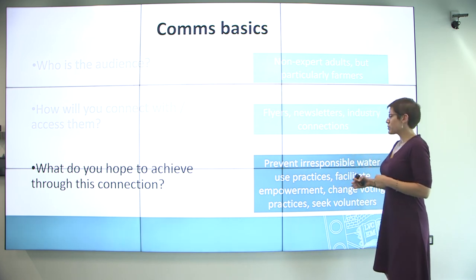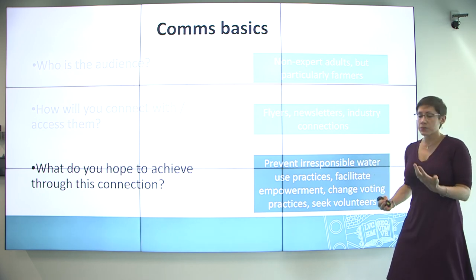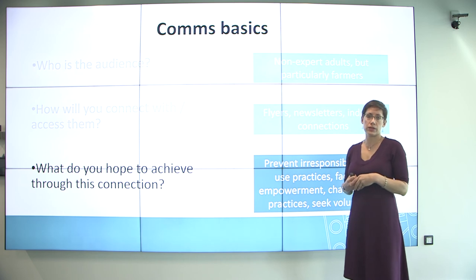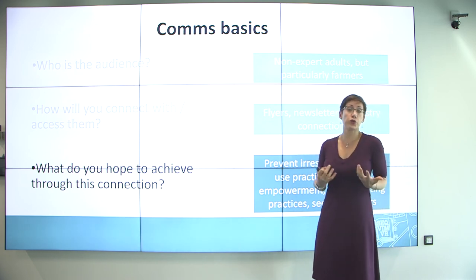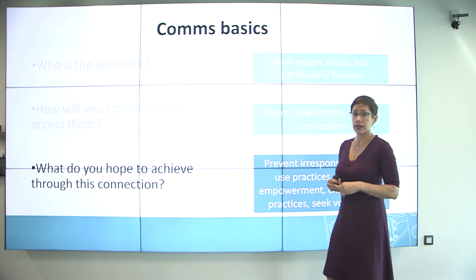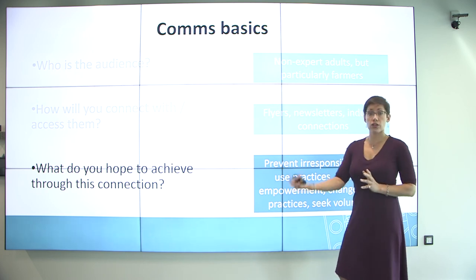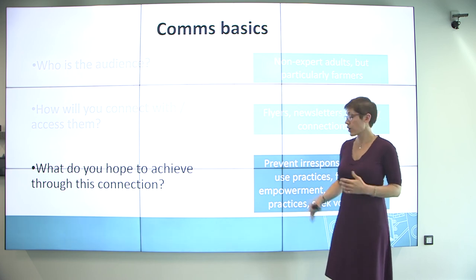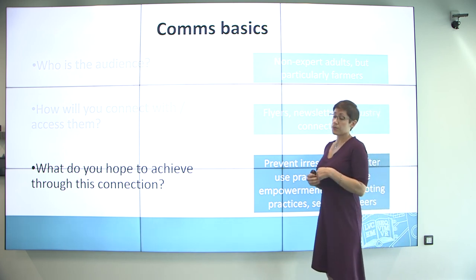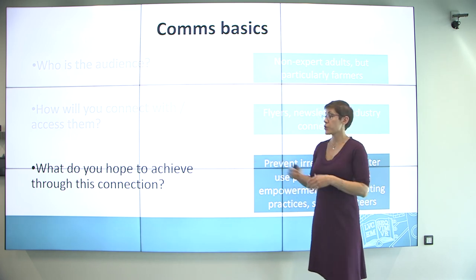For example, in this case you might be thinking about preventing irresponsible water use practices, facilitating empowerment, changing loading practices, and seeking volunteers. There's an overarching theme of social responsibility — taking research and making it useful, making it a tool for change. At the end of the day you could look back and ask: do we see fewer irresponsible water practices? Do we have more volunteers? Each of those things is actually measurable. Even empowerment — you could run surveys or see if there is more grassroots activity — and through evaluation get a sense of whether you have achieved that goal.